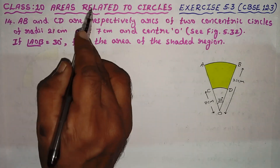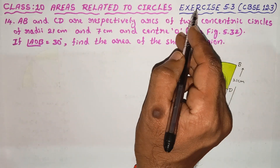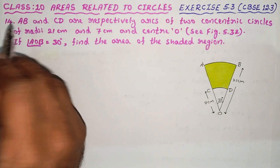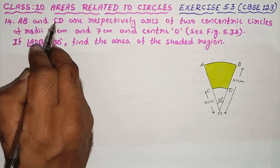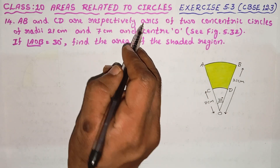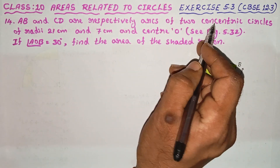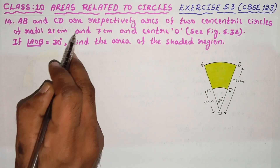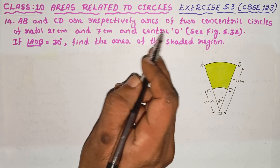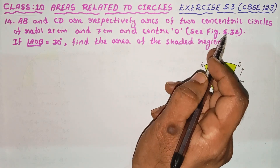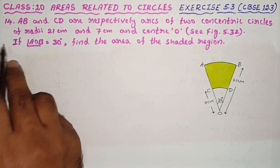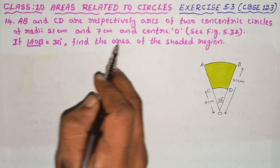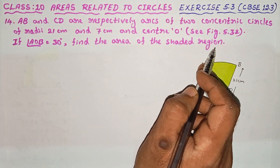Class 10, Areas Related to Circles, Exercise 5.3L, 14th problem. AB and CD are respectively arcs of two concentric circles of radii 21 cm and 7 cm and center O. If angle AOB is equal to 30 degrees, find the area of the shaded region.